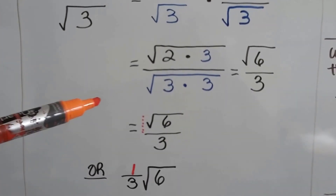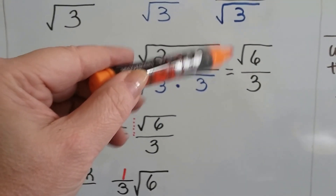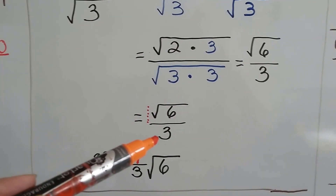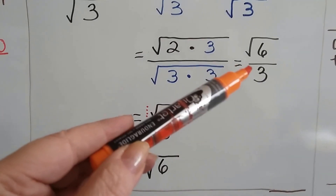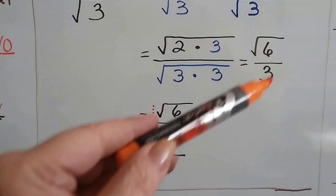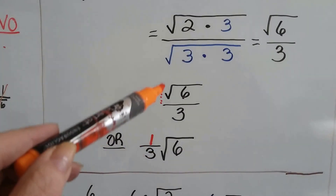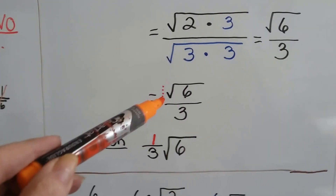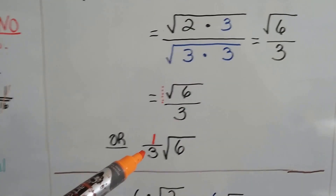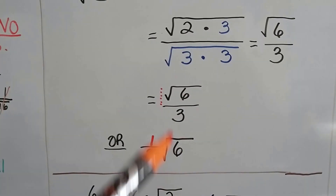There's actually a little invisible 1 in front of this radical sign. So our answer is written like this — that's perfectly okay. We can also write it like this because of that little invisible 1, or we can say it's 1/3 times the square root of 6. Either way is okay.